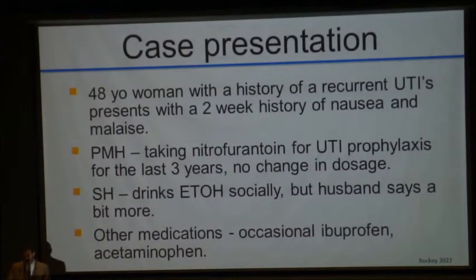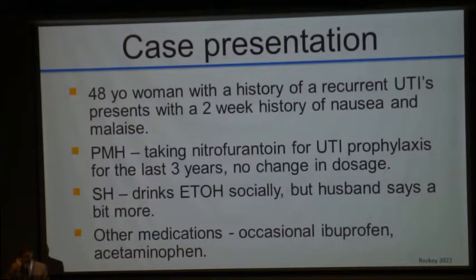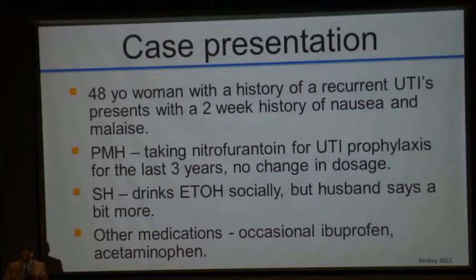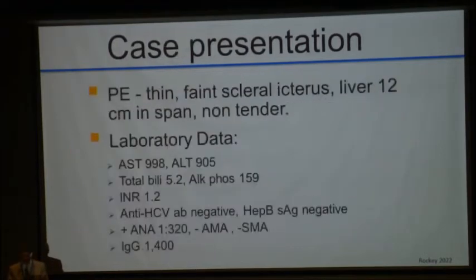The patient we saw was a 48-year-old woman with a history of recurrent UTIs who presented with a two-week history of nausea and malaise. Past medical history was notable for taking nitrofurantoin for prophylaxis over the last three years, no change in dosage. She drinks alcohol socially, but the husband says she may drink a bit more than she let on. She took other medications including ibuprofen and acetaminophen. On physical exam, she was thin, had faint scleral icterus. The liver was 12 centimeters in span, non-tender. There was no ascites.